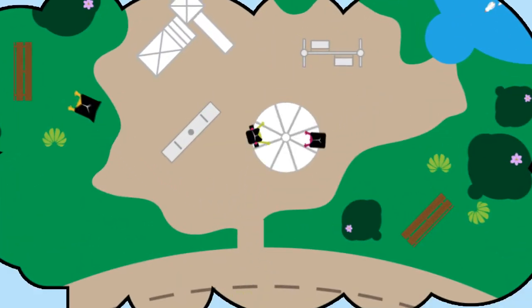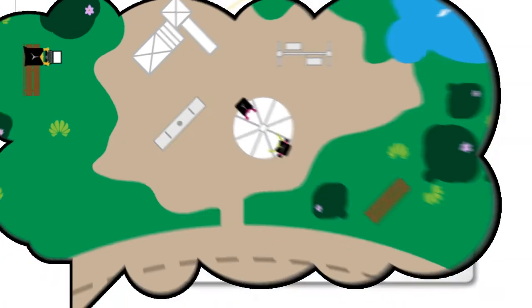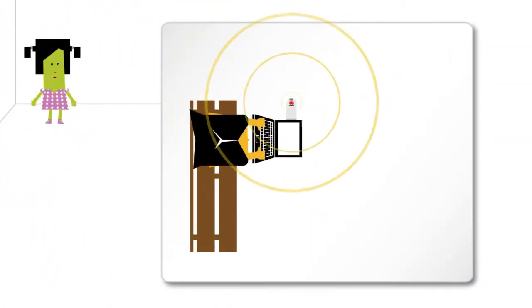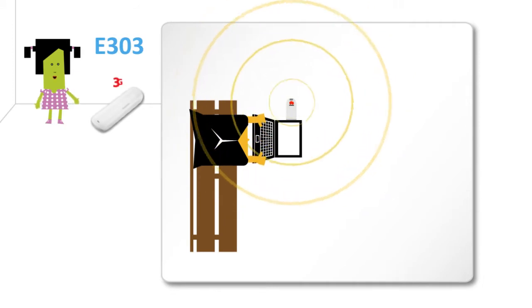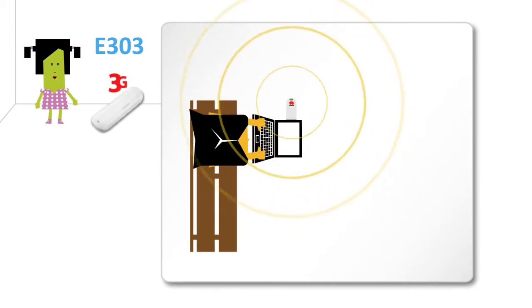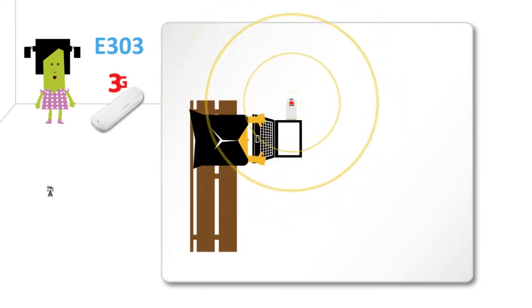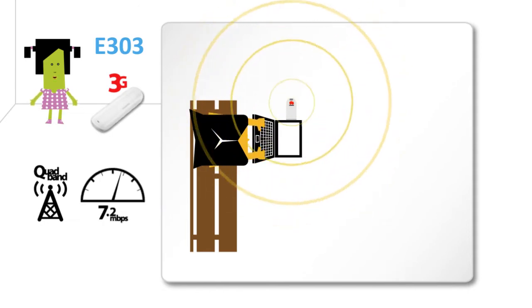But she also runs a small online business making and selling things. While we are at the park, mom uses the E303 3G modem with her laptop to check in on her business. With its 3G quad band network range and 7.2 megabytes per second download speed,